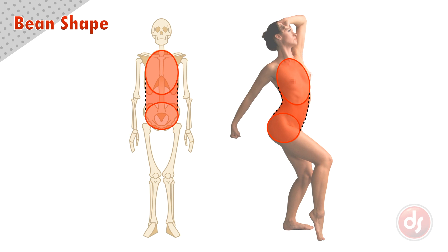To make it a full bean shape we need to show how one of the masses overlaps the other. When we draw the bean shape that point of overlap can come from the ribcage or it can come from the pelvis. We simply need to change this line to show how the forms overlap.